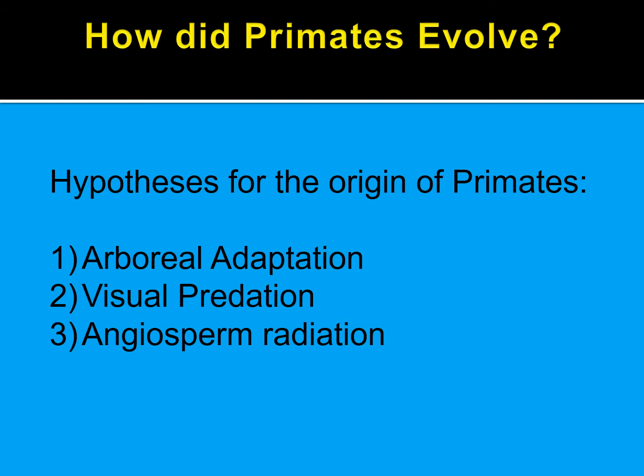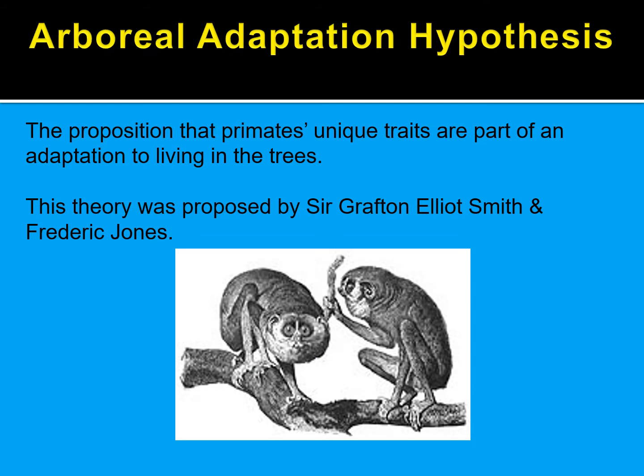How did the earliest primates first evolve? There are several contending hypotheses for why primates evolved out of the ancestral group of mammals. We have the arboreal adaptation hypothesis, the visual predation hypothesis, and the angiosperm radiation hypothesis. The arboreal adaptation hypothesis is the proposition that the unique traits that primates have are part of an adaptation to living in the trees.